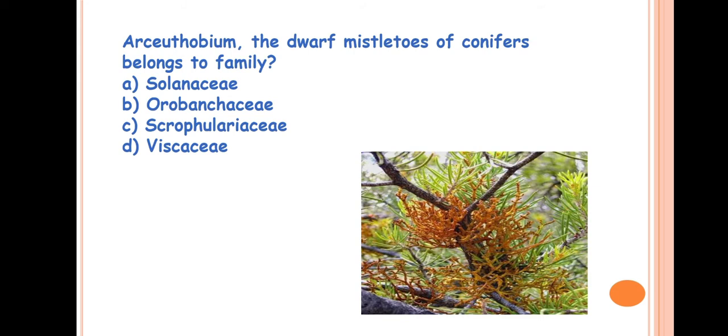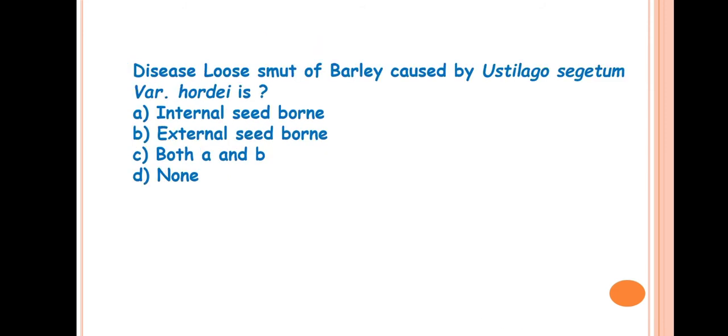Next question is, Arceuthobium, the dwarf mistletoe of conifer belongs to the family? Answer is Viscaceae. This is a very important phanerogamic parasite or it is commonly known as dwarf mistletoe. This is a stem parasite or partial stem parasite. In this photo you can see here, this is parasitizing on a conifer plant.